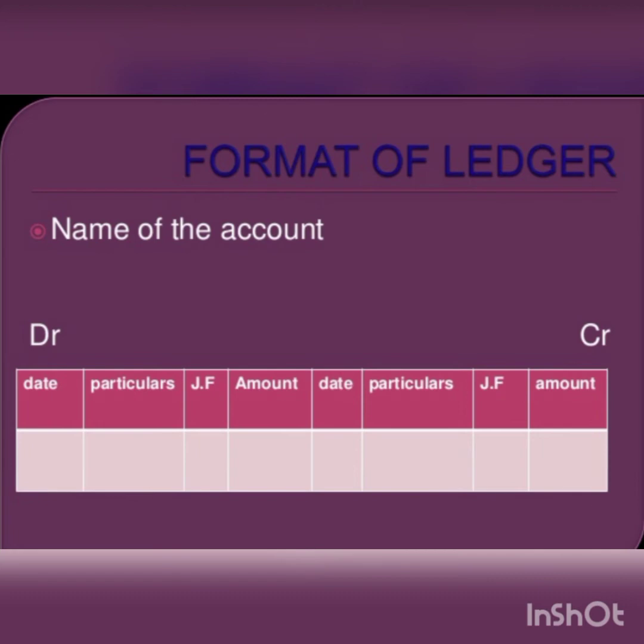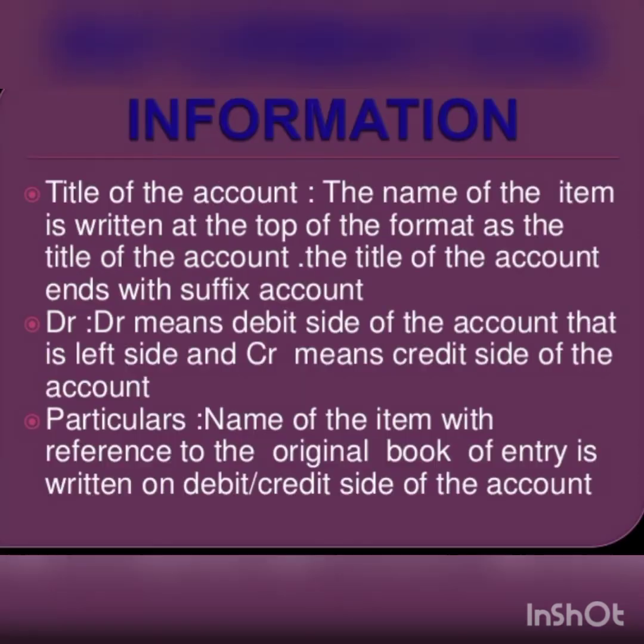The title of the account ends with the suffix 'account', for example cash account, capital account, etc. Next is DR or CR: DR means the debit side of the account, that is the left side, and CR means the credit side of the account, that is the right side. The next column is the date column — year, month, and date of transaction are posted in chronological order. The next column is the particulars column — the name of the item with reference to the original book of entry is written on the debit or credit side of the account.